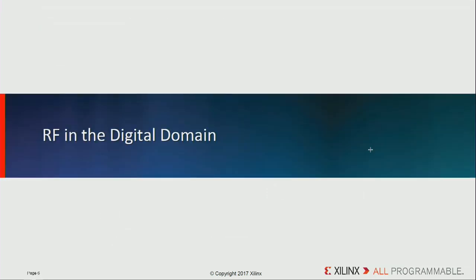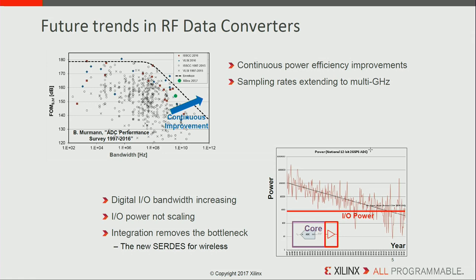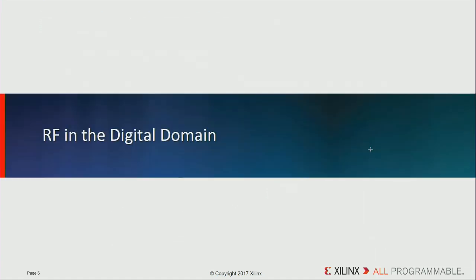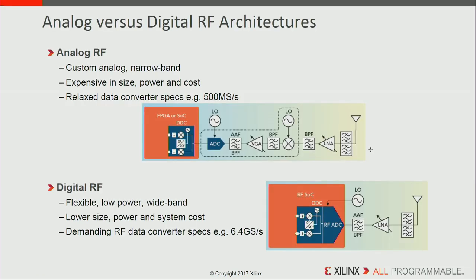For that reason, in wireless we should remove the SERDES interface and monolithically integrate these RF data converters into the FPGA. Once you've done that, it opens up the possibility to take the analog RF that used to be on the board and map it into the digital domain. Moving to 16 nanometers gives not only better analog performance, but also improved digital performance in terms of power, speed, area and cost efficiency.